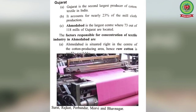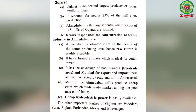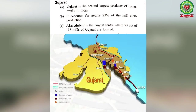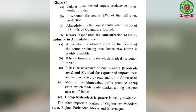Gujarat is the second largest producer of cotton textile in India, accounting for nearly 23% of mill cloth production. Ahmedabad is the largest center, where 73 out of 118 mills of Gujarat are located. Ahmedabad is situated right in the center of the cotton-producing area, so raw cotton is readily available. It has a humid climate ideal for cotton thread. It has an advantage of both the Kandla Free Trade Zone and Mumbai port for export and import.